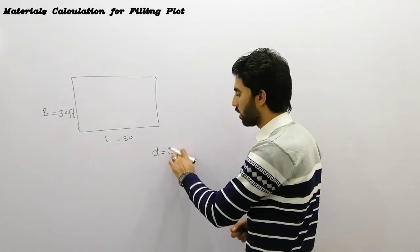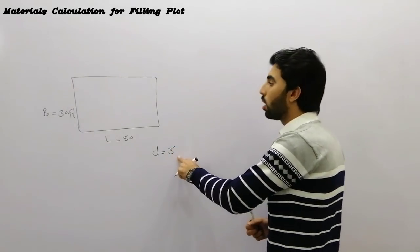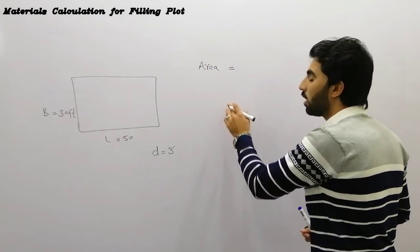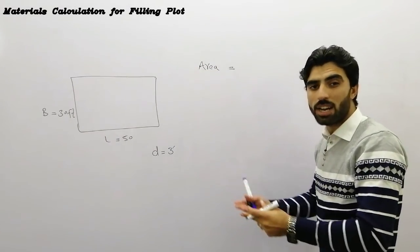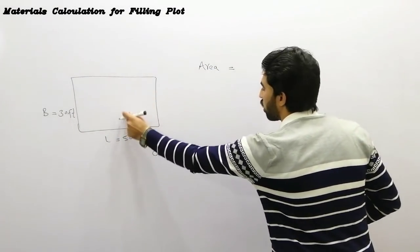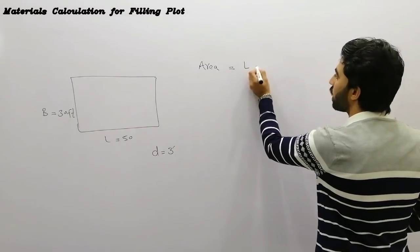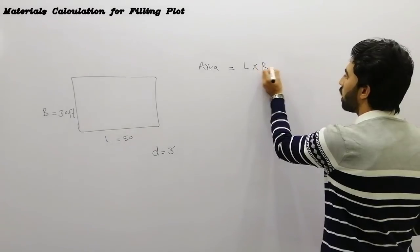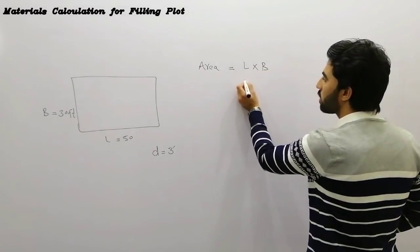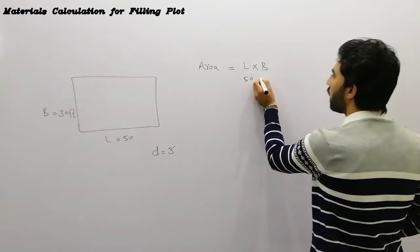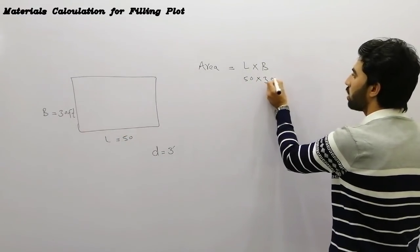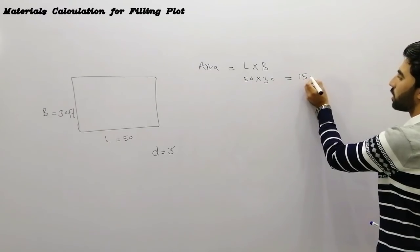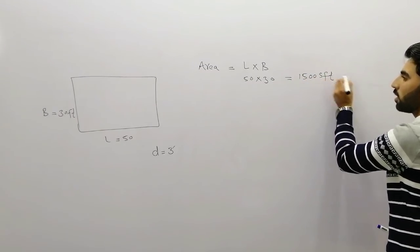First of all we will find the area to find material, sand or soil or any other material for filling this plot. So for area, L means length of plot and also breadth of plot. The length is here 50 and the breadth is here 30 feet, so it will give us 1500 square feet.